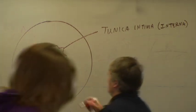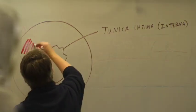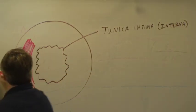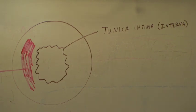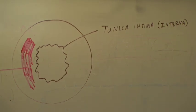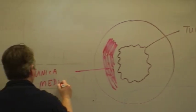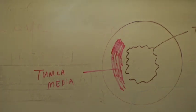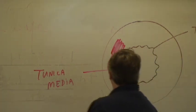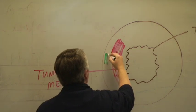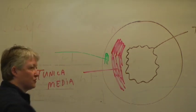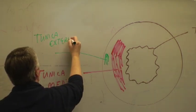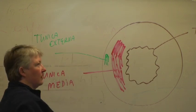Inside of that is a layer of smooth muscle called the tunica media, and outside of that is a layer of connective tissue called the tunica externa, also known as the tunica adventitia.